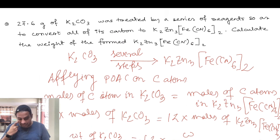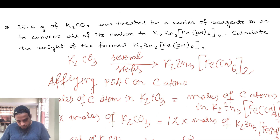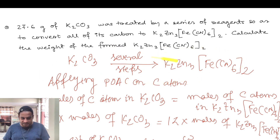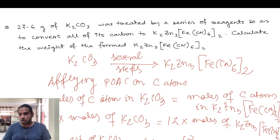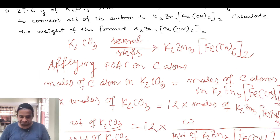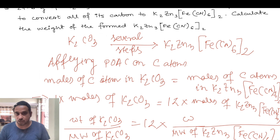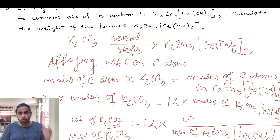We solve this because K2CO3 is converted to K2Zn3[Fe(CN)6]2 through several steps using various reagents. Since we don't know each intermediate reaction, we can still apply PoSC directly on carbon atoms. This is one of the finest applications of PoSC. That's all for today — if you like this video, please like and subscribe to our channel. Thank you for watching. Keep learning. See you in the next video.